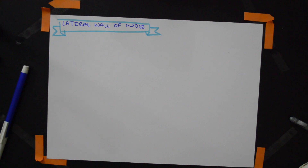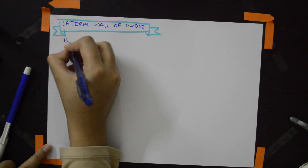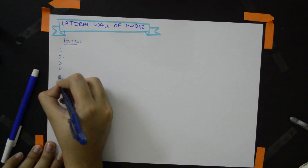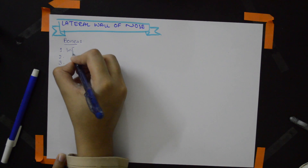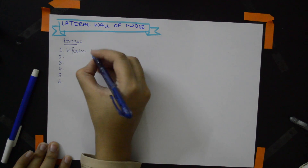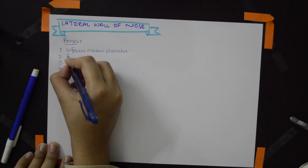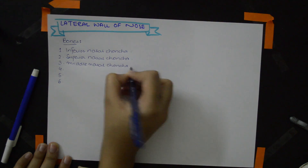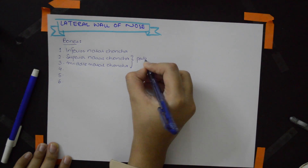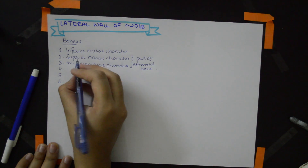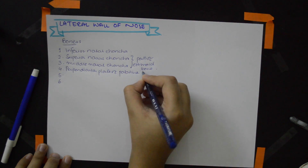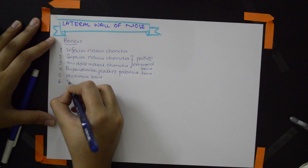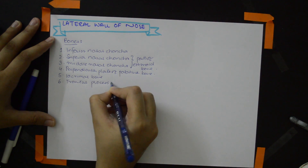Now let's continue with the lateral wall of the nose. The bones that make up the lateral wall are six in number. First is the inferior nasal concha. Then we have the superior nasal concha and the middle nasal concha — these two are parts of the ethmoid bone. Then we have the perpendicular plate of palatine bone, then the lacrimal bone, and the frontal process of maxilla.